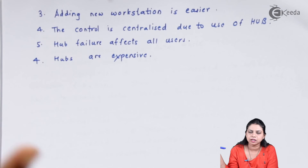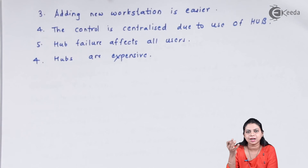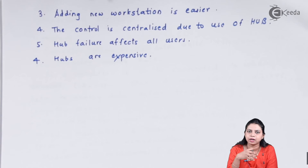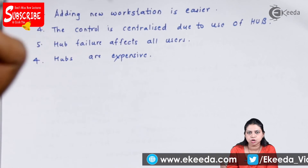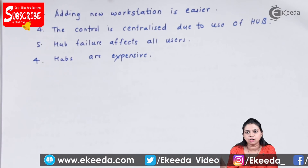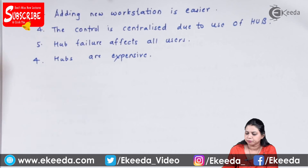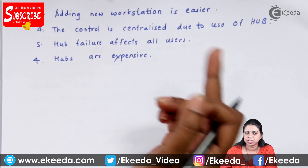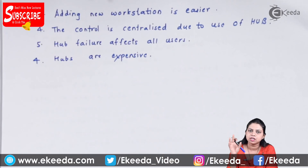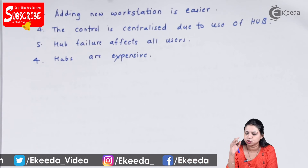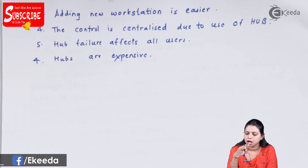Adding a new station is easier in star topology, whereas in bus topology or ring topology all your nodes are connected to each other, so adding a new node in between becomes difficult. But in the case of star topology, since your nodes are connected to the hub, you can directly detach or attach a node to the hub. The control is centralized — the hub receives and sends the signal to the appropriate destination.